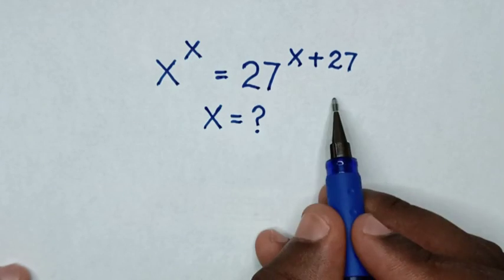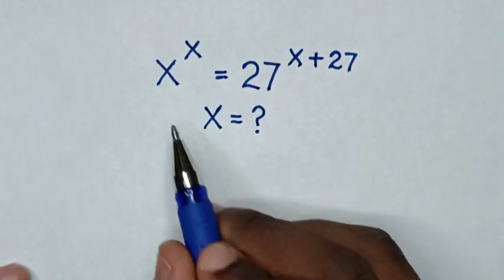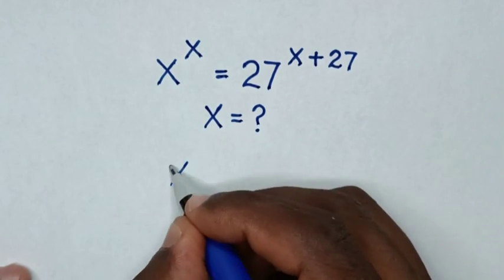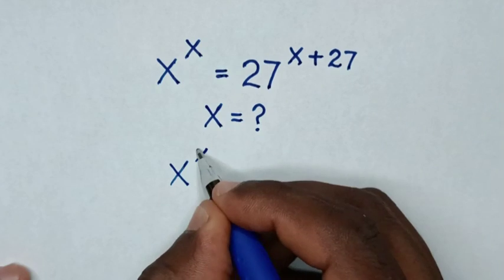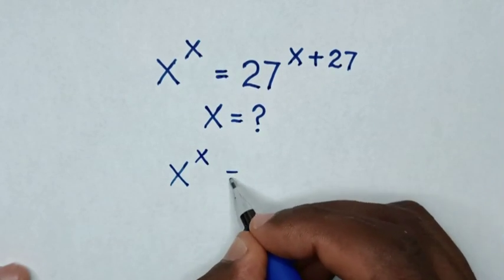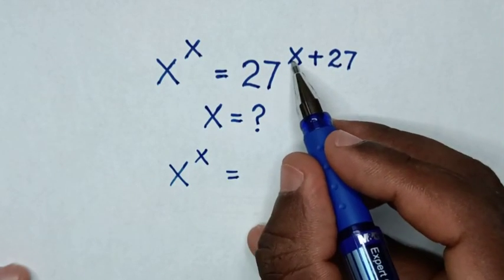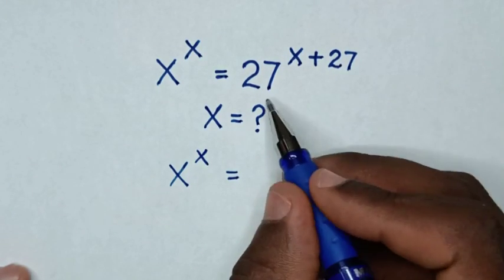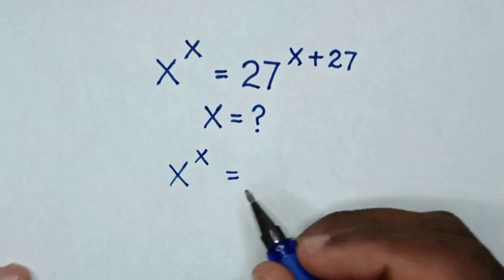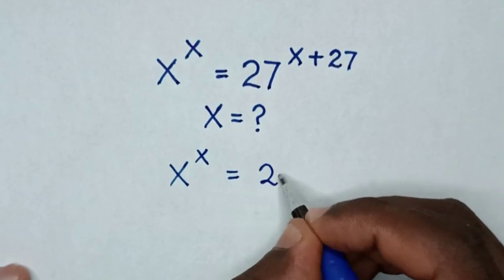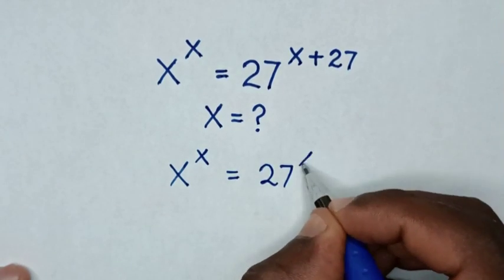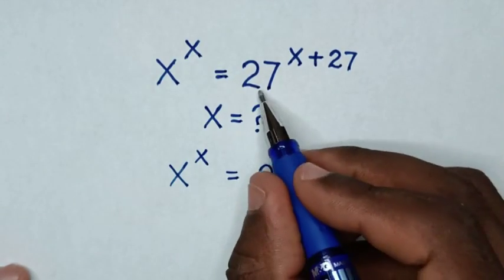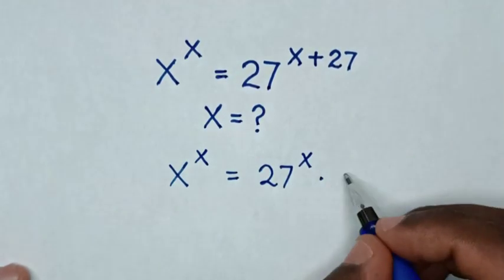From this equation, x power of x is equal to 27 power of x plus 27, which is the same as 27 power of x times 27 power of 27.